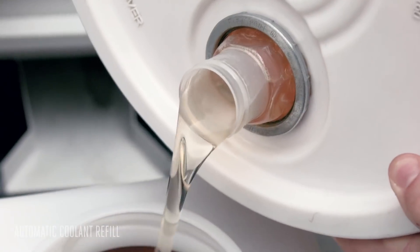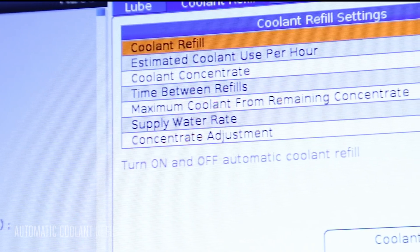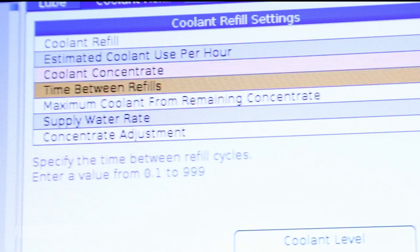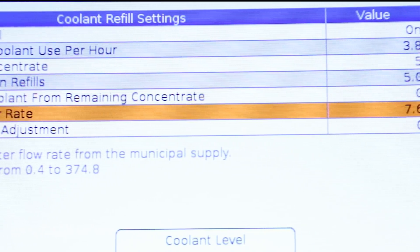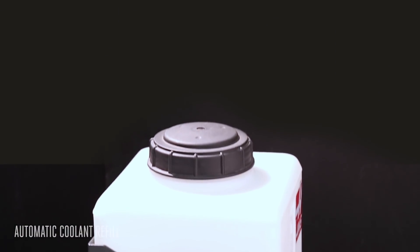Simply fill the tank with concentrate, connect the system to your shop's water supply, and use the simple coolant refill screen on the control to adjust the system to your water pressure and preferred concentration mix. That's all it takes to set the system up.